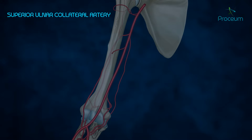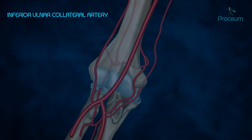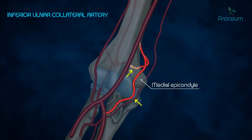Superior ulnar collateral artery: this artery travels alongside the ulnar nerve, posterior to the medial epicondyle, and takes part in the anastomosis around the elbow. Inferior ulnar collateral artery: this artery descends anterior to the medial epicondyle and also takes part in the anastomosis around the elbow after dividing into anterior and posterior branches.